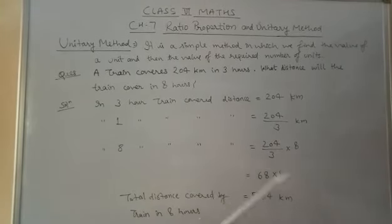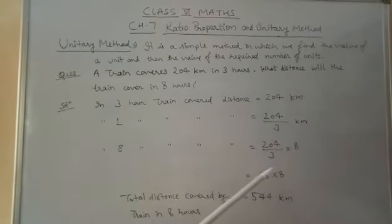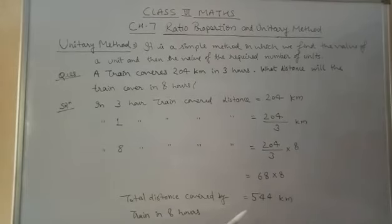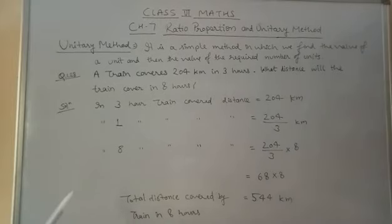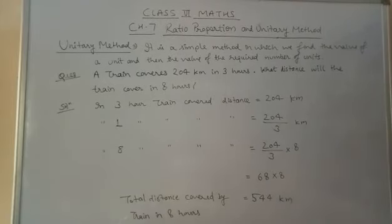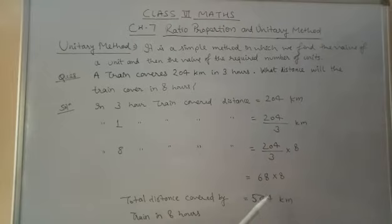By solving this value, 204 divided by 3 is 68, into 8. By multiplying, we get 544 kilometers. So students, the total distance covered by the train in 8 hours is 544 kilometers.